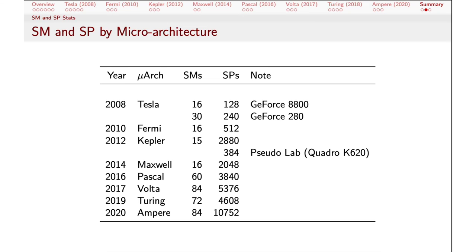By way of summary, here's the same historic perspective going back to 2008 and the different microarchitectures, collecting together the key statistics from these slides — just representative numbers, since you can find parts in each product family with more or less SMs or SPs. Back at the beginning we had 128 SPs; now we're at 10,000 SPs, which is pretty remarkable growth.